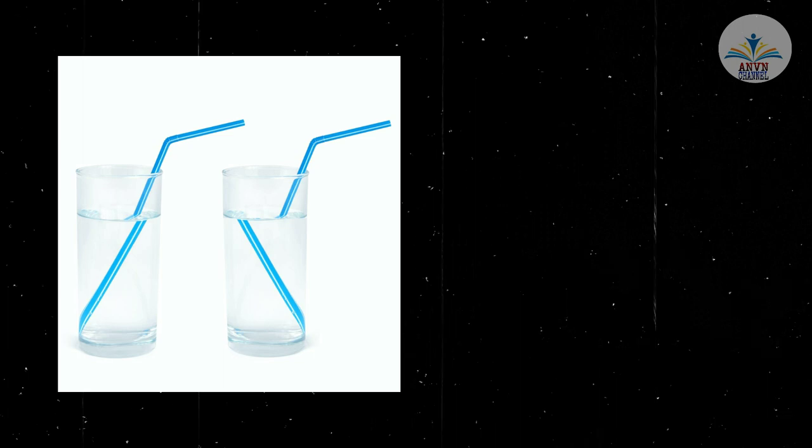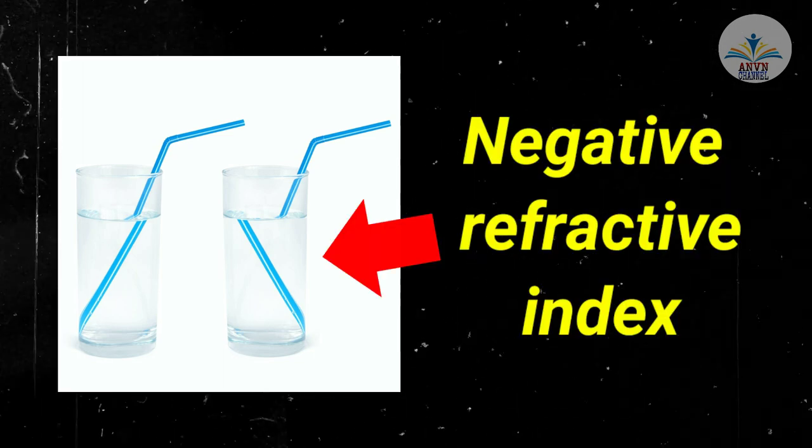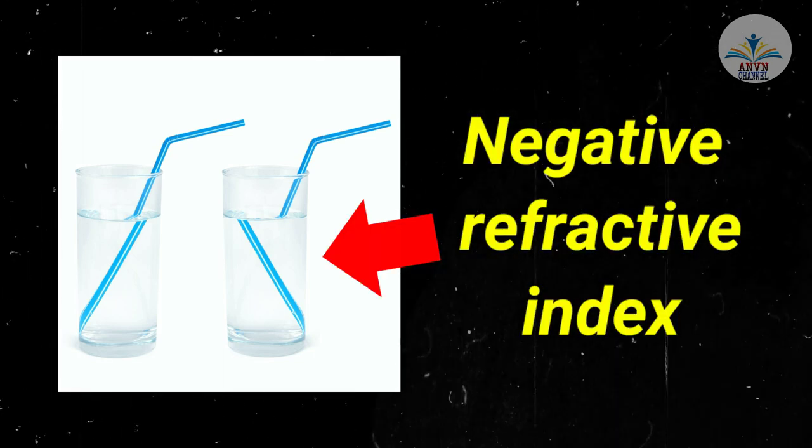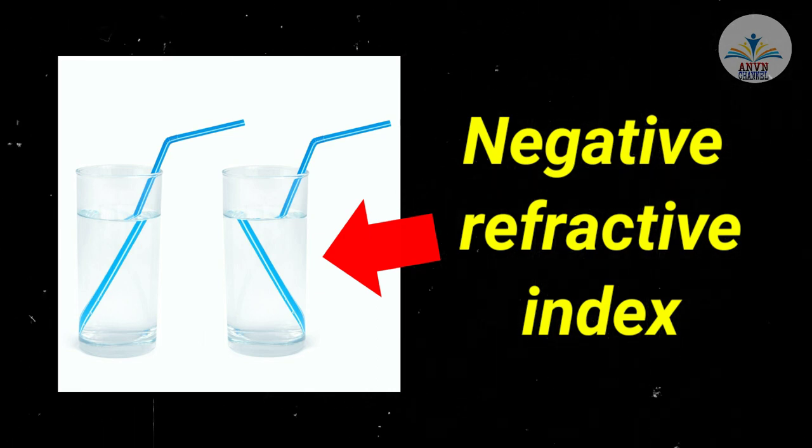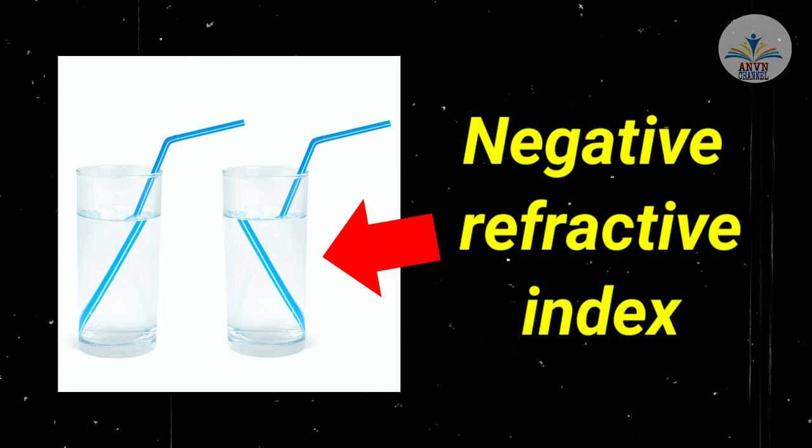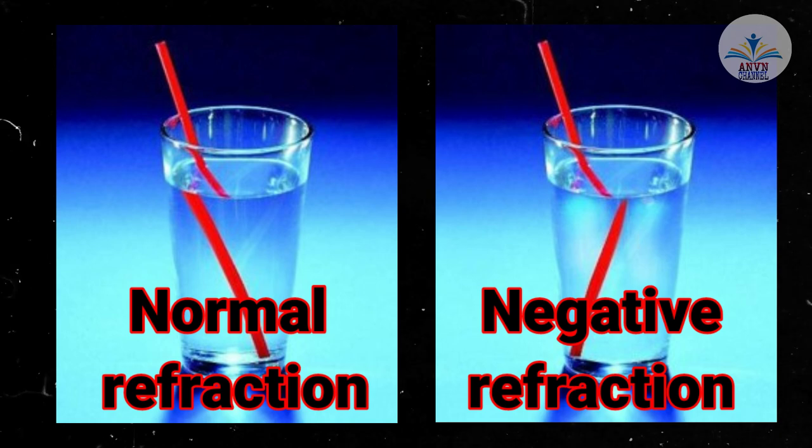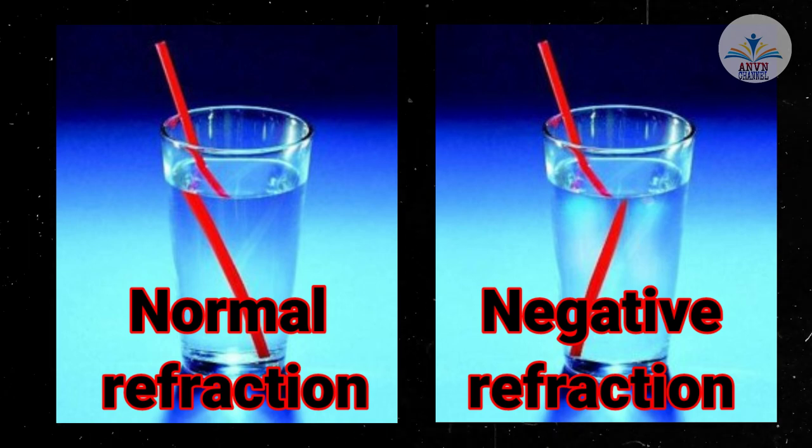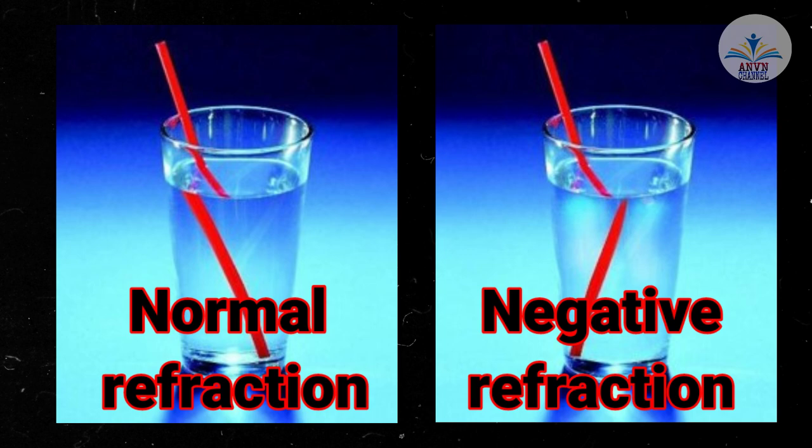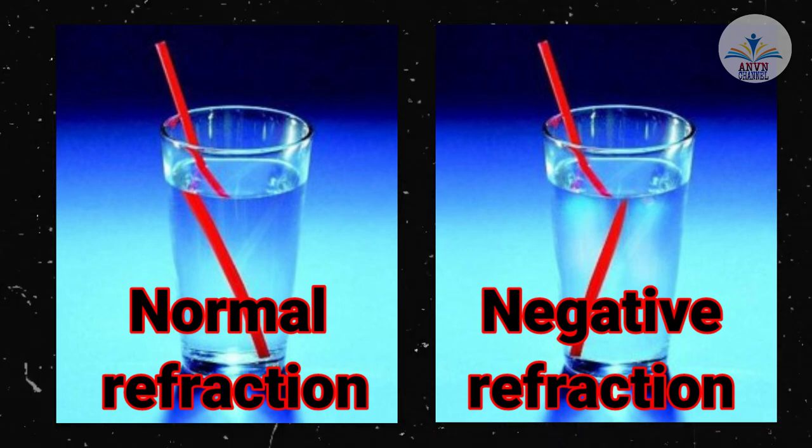Number two. Metamaterial has a negative refractive index. This makes metamaterials of great importance in electromagnetic applications. A negative refractive index is the electromagnetic phenomenon where light rays become refracted but in the opposite way.